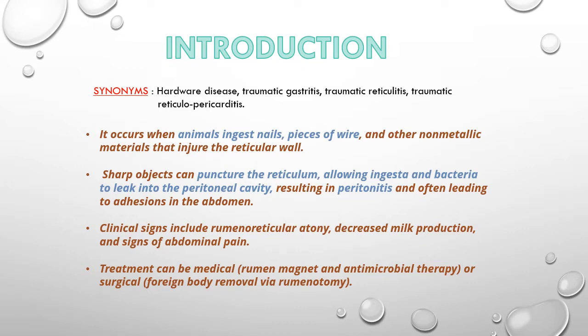Some clinical signs include rumen or reticular atony, decreased milk production in lactating animals, and signs of abdominal pain. Treatment can be either medical or surgical. If medical, rumen magnet and antimicrobial therapy can be used. If surgical, foreign body removal via rumenotomy can be done.